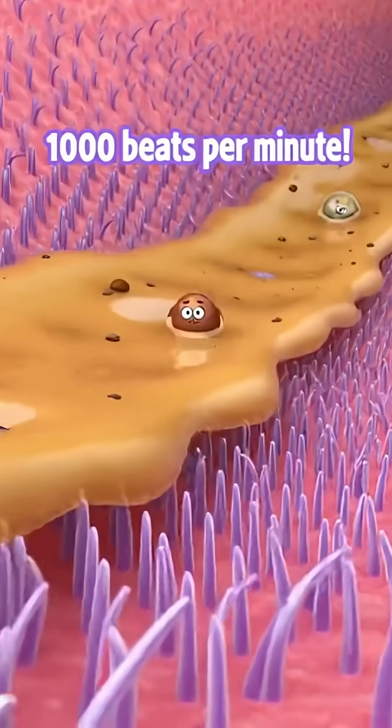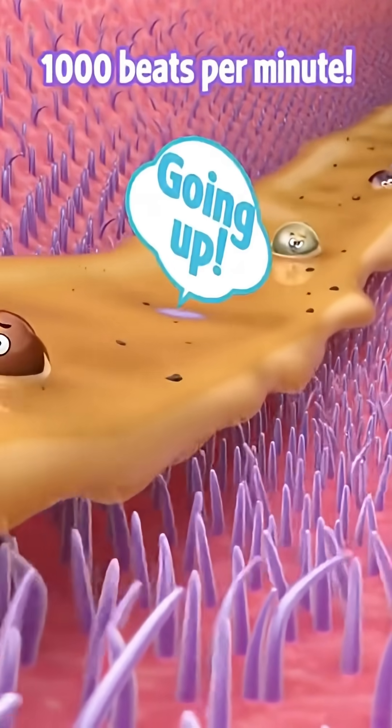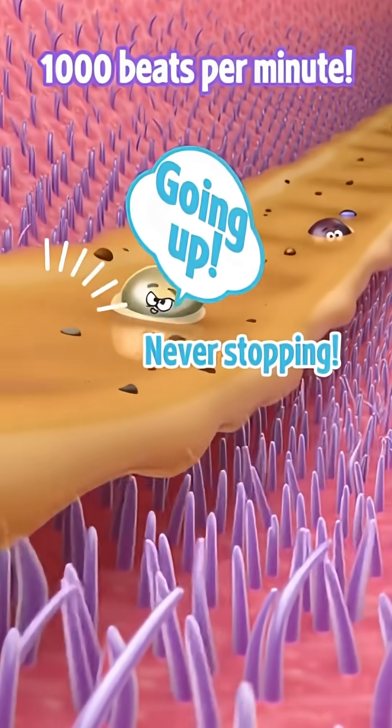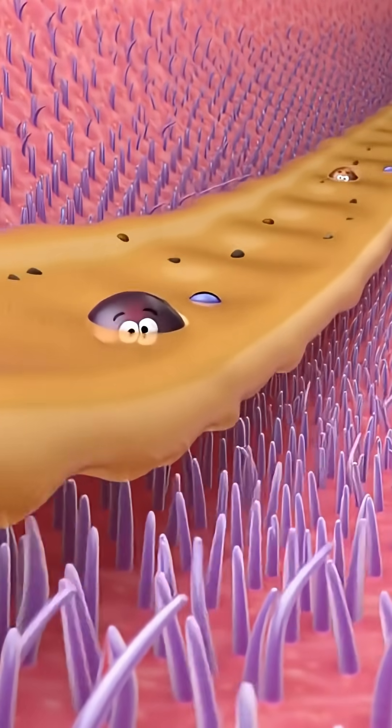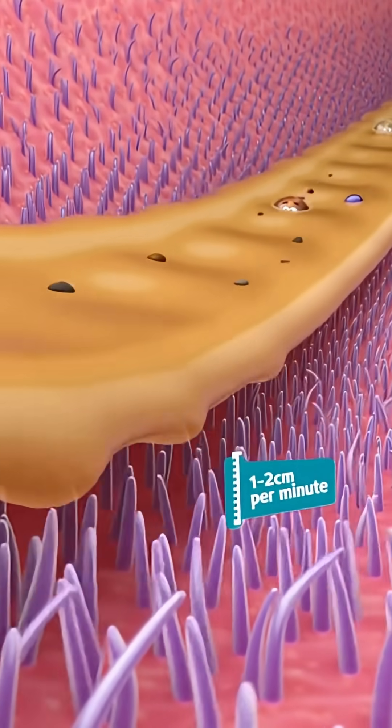1,000 beats per minute! Going up! Never stopping! 200 million cilia beat 1,000 times every minute, creating a mucus escalator that moves debris upward at 1 to 2 centimeters per minute. Out of your lungs.